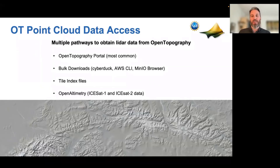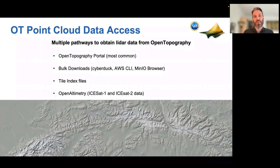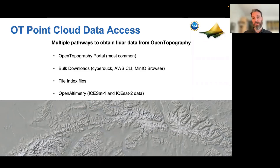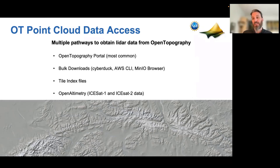Now I'm going to stop talking at slides and show you some ways to get LiDAR data through Open Topography. The most common method is through our portal — it's feature-rich and most recommended, though not everyone wants to use the web map. Other options include bulk downloads, tile index files (which let you download data from within a GIS), and I'll point to OpenAltimetry, a sister project that has access to ICESat-1 and ICESat-2 data for those interested in photon counting or waveform-based data.